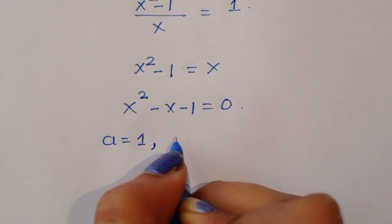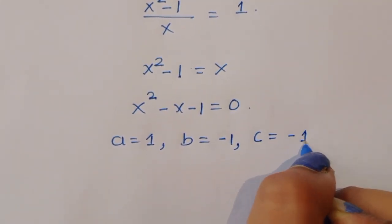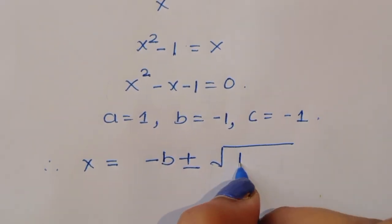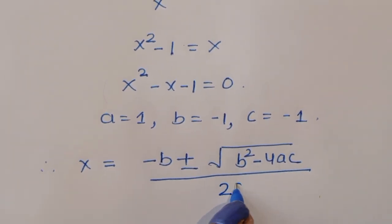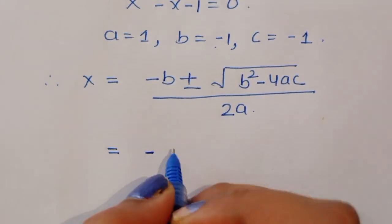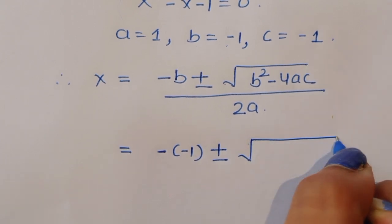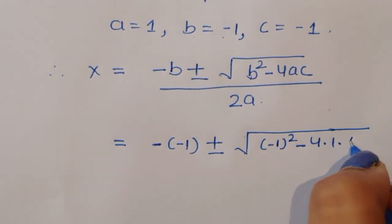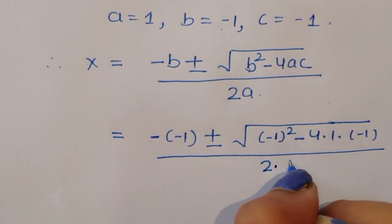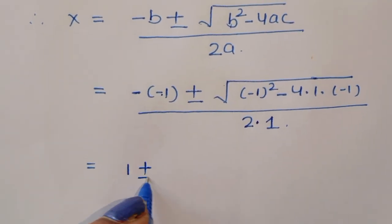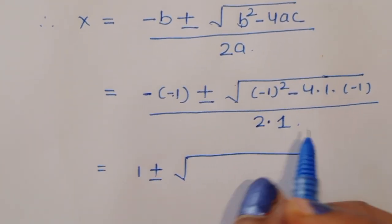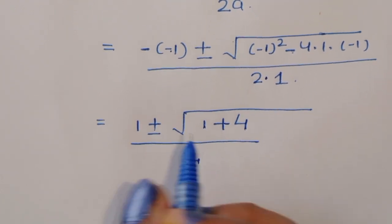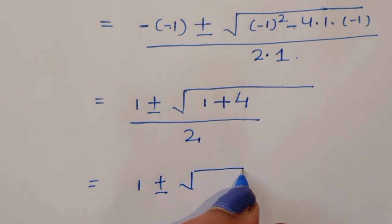Now the coefficients are: a equals 1, b equals minus 1, and c equals minus 1. Therefore using the quadratic formula, x equals minus b plus or minus square root of (b squared minus 4ac) upon 2a. Substituting: minus of minus 1 plus or minus square root of (minus 1 squared minus 4 times 1 times minus 1) upon 2 times 1.